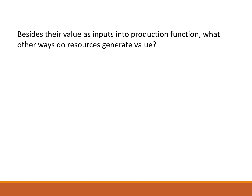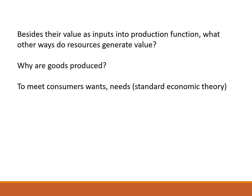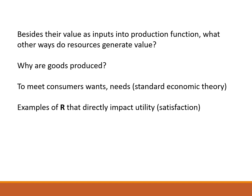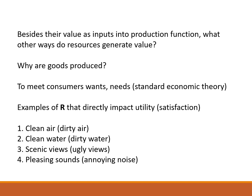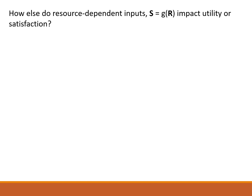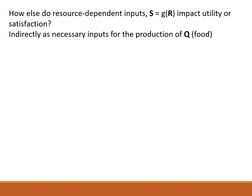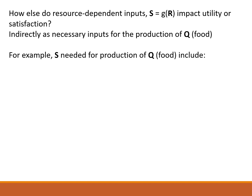Besides their value as inputs into the production function, what other ways do resources generate value? Goods are produced to meet consumers' wants and needs. Examples of natural resources that directly impact utility are clean air, clean water, scenic views, and pleasing sounds. Resource-dependent inputs also impact utility indirectly as necessary inputs for production of Q — for example, S needed for production of Q includes gasoline, diesel oil, propane, and electricity.